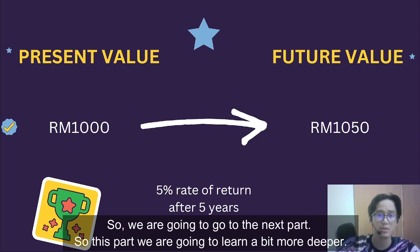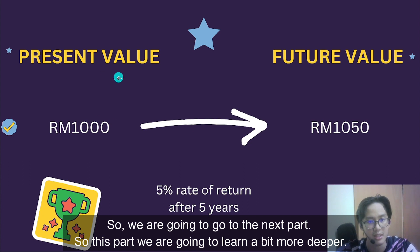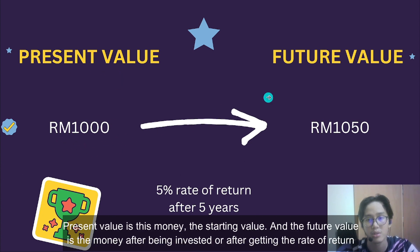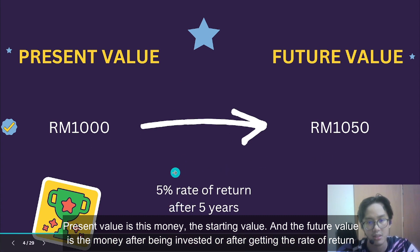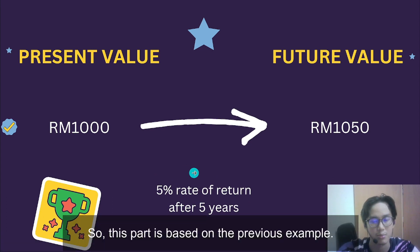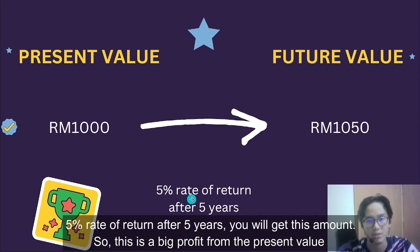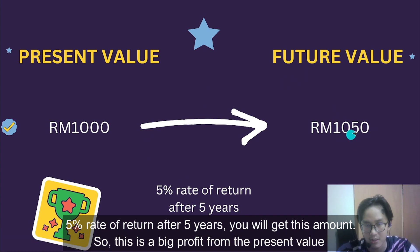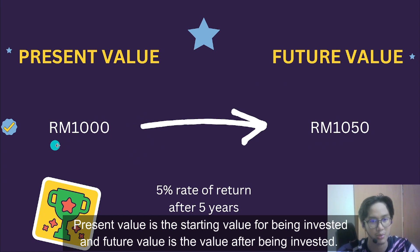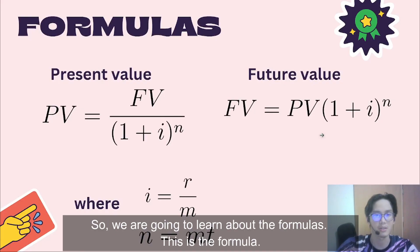Present value is the starting value — the money before investment — and future value is the money after being invested or after getting the rate of return. Based on the previous example of a 5% rate of return after five years, you'll get a significantly larger amount, which represents the profit from the present value. Present value is the starting value before being invested, and future value is the value after being invested.